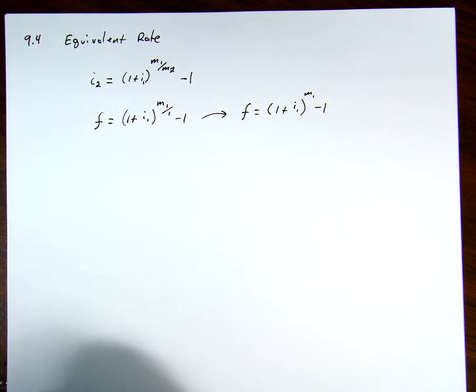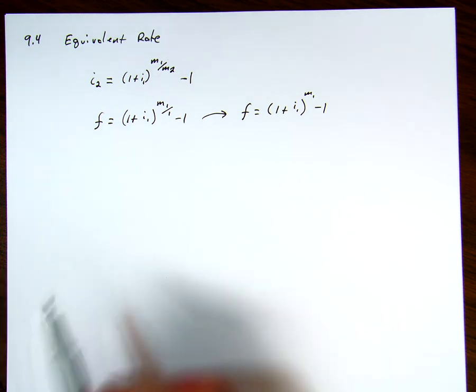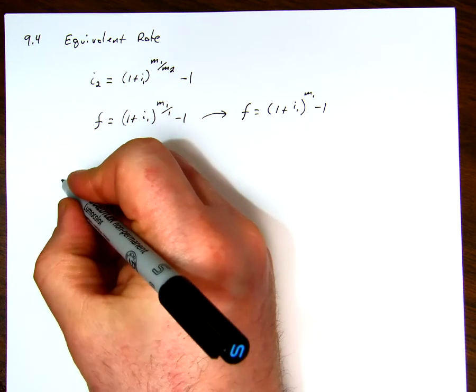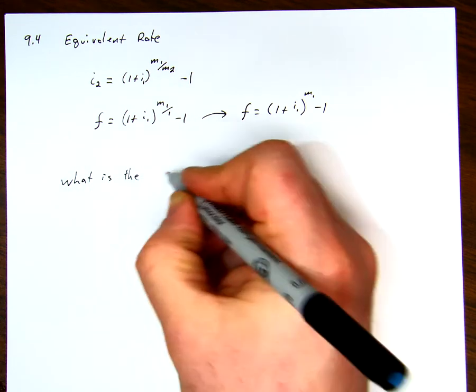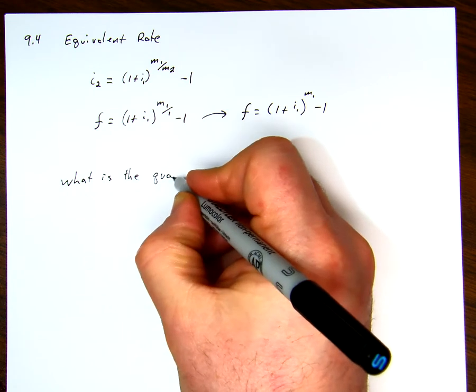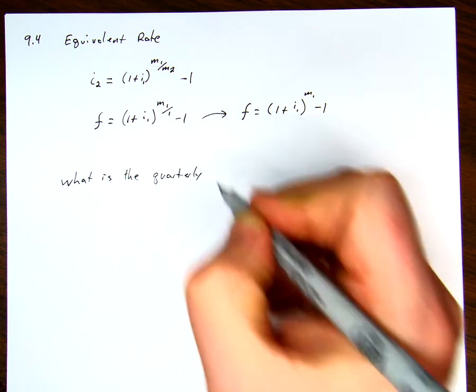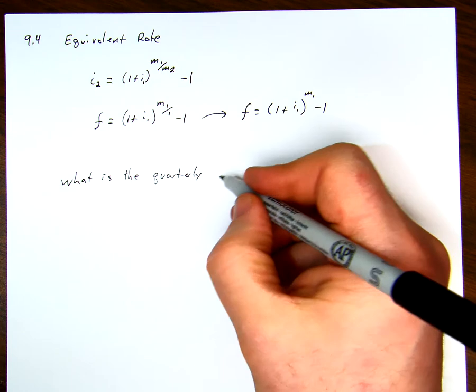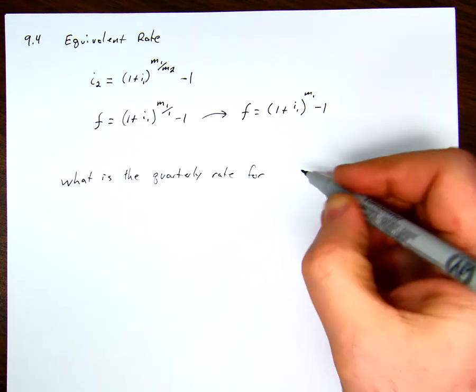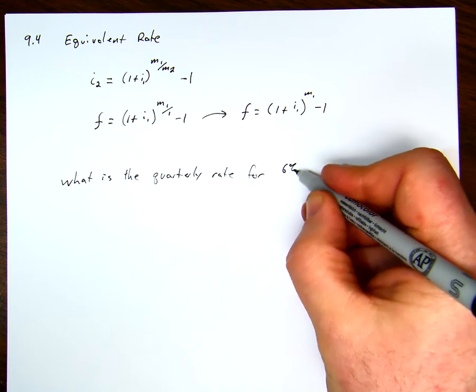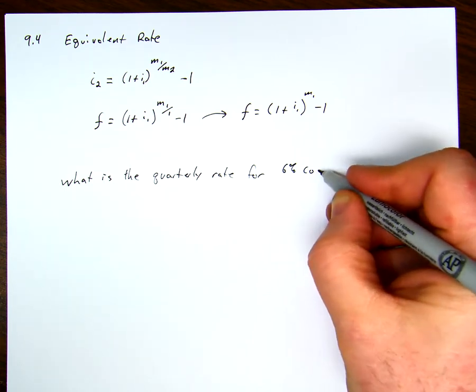So what we're doing is we're trying to figure out what rates are not just converting them to annual, but into a different compounding frequency. So we might say, what is the quarterly rate for 6% compounded monthly?